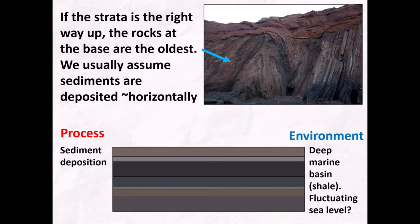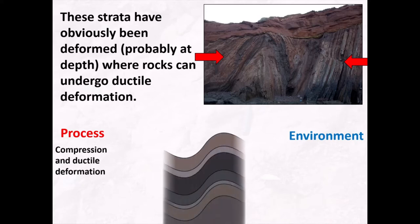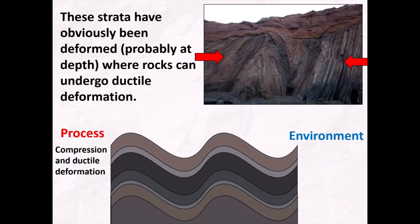These strata have then obviously been deformed, probably at depth where rocks tend to form in a ductile fashion to give us folding. So the next stage of our geological history suggests that these rocks were compressed and underwent ductile deformation, and I'm going to assume that occurred somewhere relatively deep in the crust where we have high temperatures that aid ductile deformation.